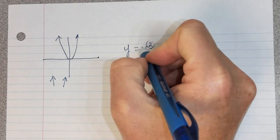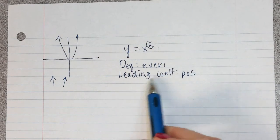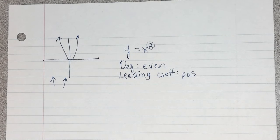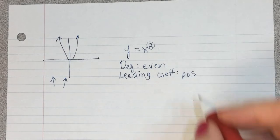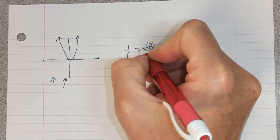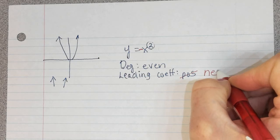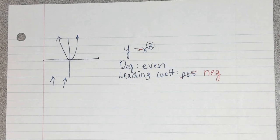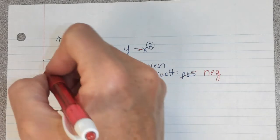Now what would happen if I changed it from being the leading coefficient that's positive to being a leading coefficient that's negative? I'm going to change it. I'm going to put a negative here. So now I'm going to make the leading coefficient negative. What does that do to the function? It flips it over, doesn't it?